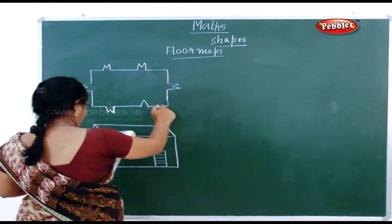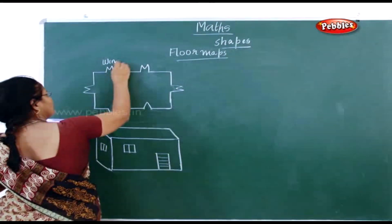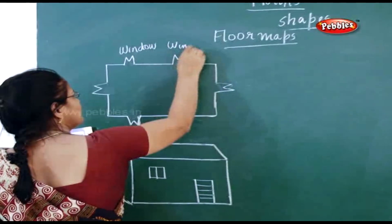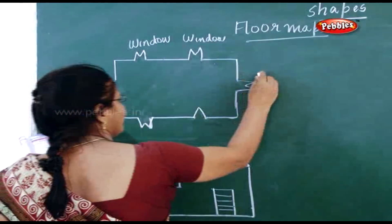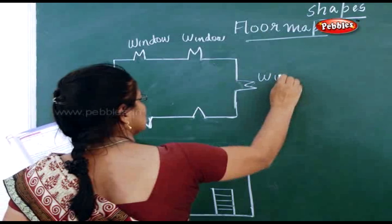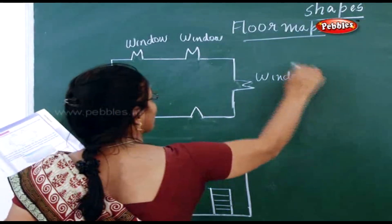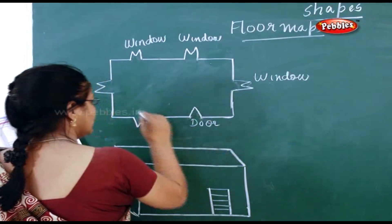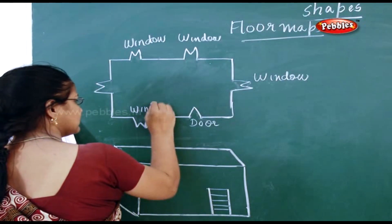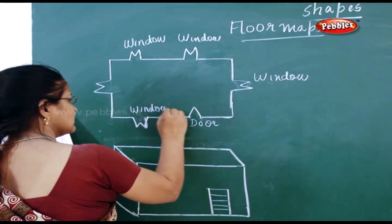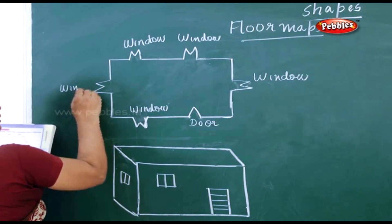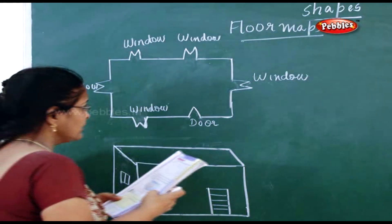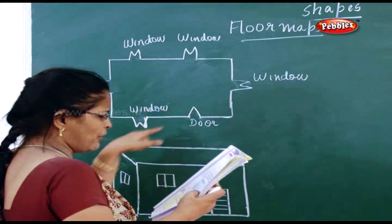What is a floor map? See here — window, this is also a window, window. This is what you call a floor map. This is a door, this is a window, here also a window. So this you call a floor map. This is a floor map of a house.